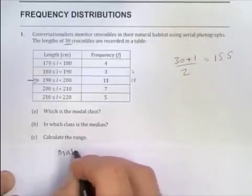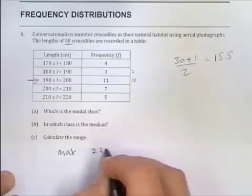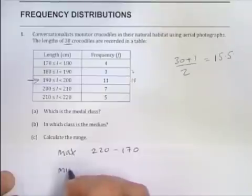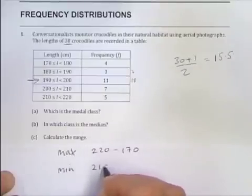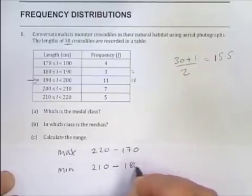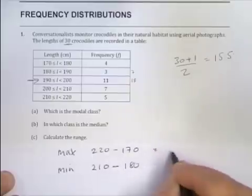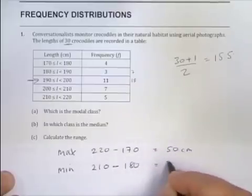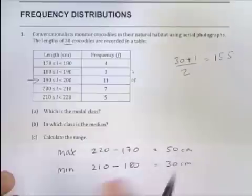So I would say the maximum range would be the 220 take away 170. And the minimum possible range is possible, very unlikely, but it's possible it could be as small as 210 take away the 180 there. So this would give us a range of 50 cm. And this one would give us a range of just 30. So the range is somewhere between 30 and 50.